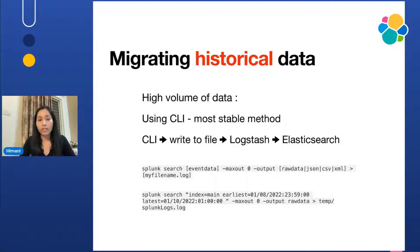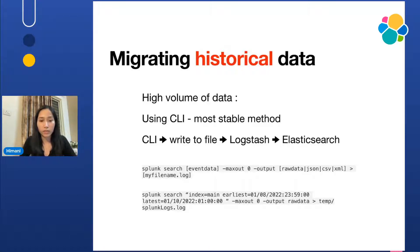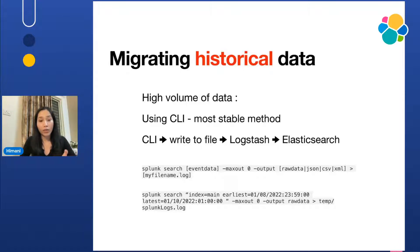For high-volume data, the most stable method that Splunk documentation talks about is using the CLI. As you can see here, we are basically giving a search command wherein we can specify the time window we want to export the data. We can also specify the format for the output — it could be raw data or JSON. We're basically telling Splunk to write all the query data into a file so that we can later ingest it into Logstash.